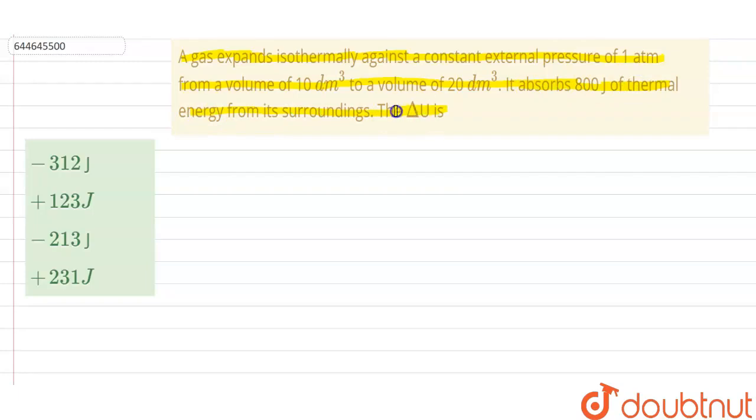So we have to find the change in internal energy here. Isothermally means in this case the temperature is constant, that is there is no change in temperature, that is delta T is equal to zero. Here it has been given the volume V1 is 10 decimetre cube.